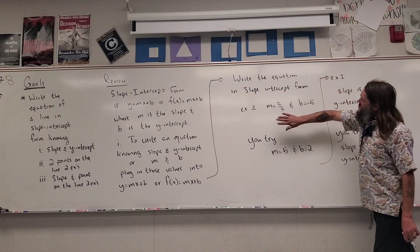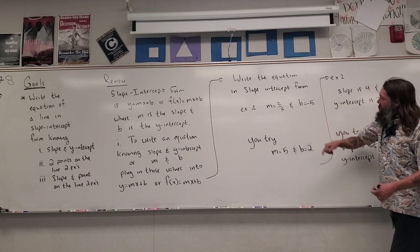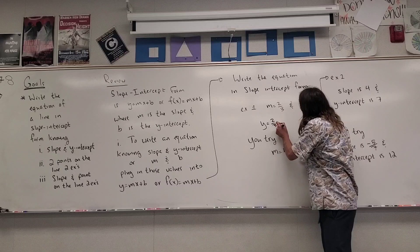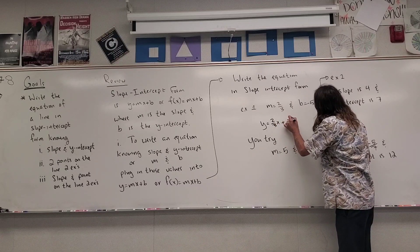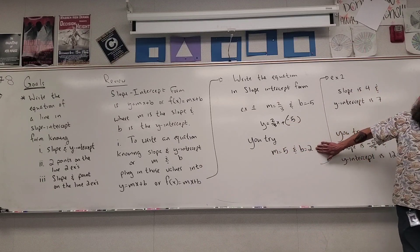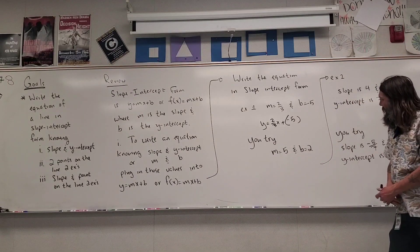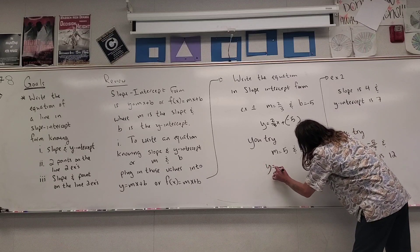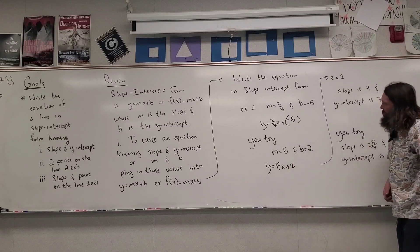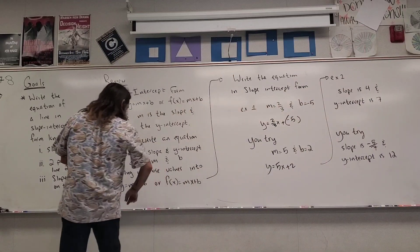First example: slope m = 2/3 and y-intercept b = negative 5. The equation in slope-intercept form is y = (2/3)x + (−5). Now hit pause and try this one — remember, you don't learn if you don't try. Hopefully you're back: the answer for the practice problem is y = 5x + 2.